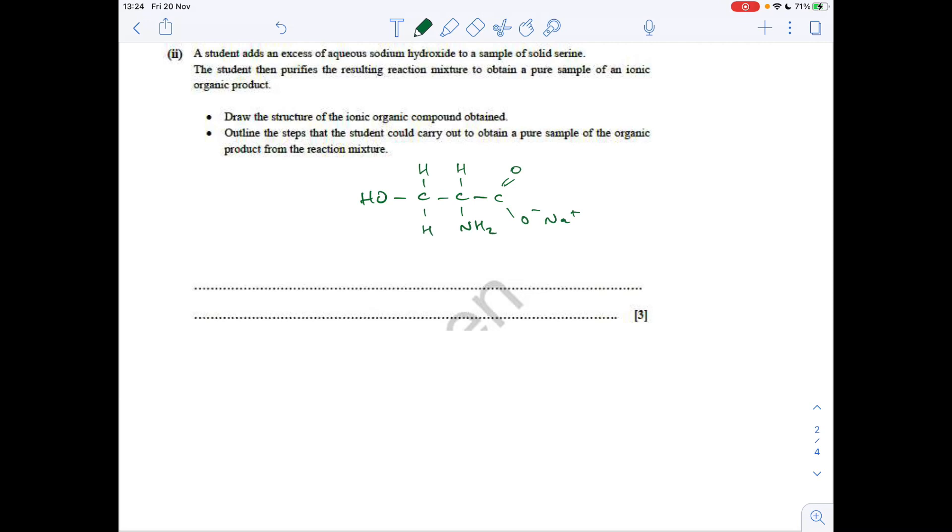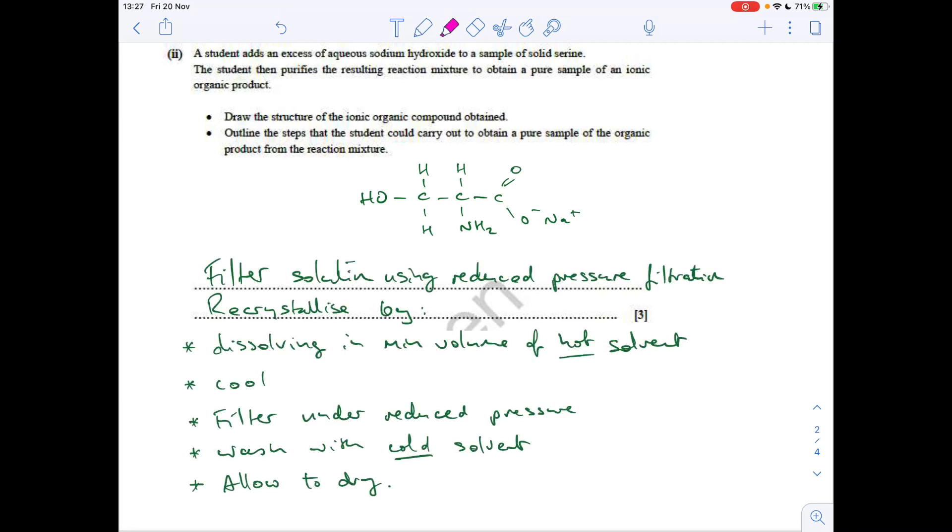And the second bullet point, outline the steps the student could carry out to obtain a pure sample of the organic product from the reaction mixture. They're going to have to do a recrystallisation, and so the steps involved with that, I'll write all this up, but I'll just say it now. They would filter the solution using reduced pressure, and then they would recrystallise, so they'd dissolve it in a minimum volume of hot solvent, they'd cool it back down, that would allow the pure crystals to form.